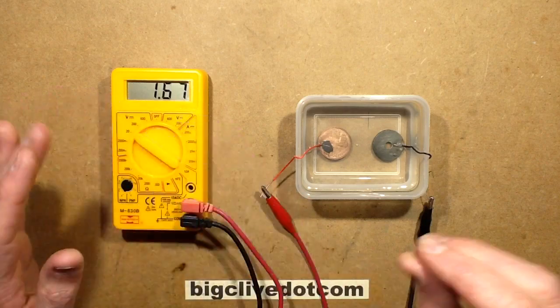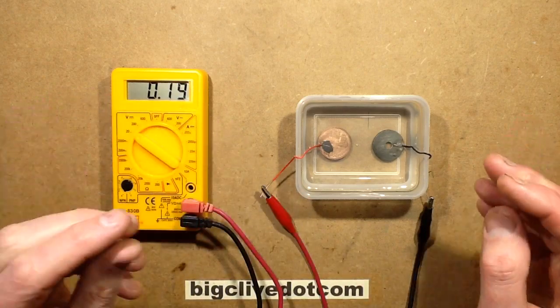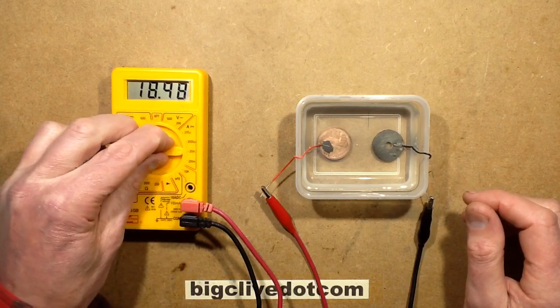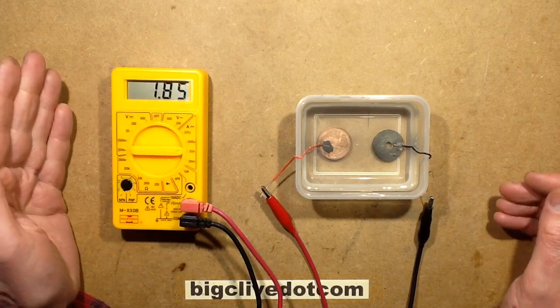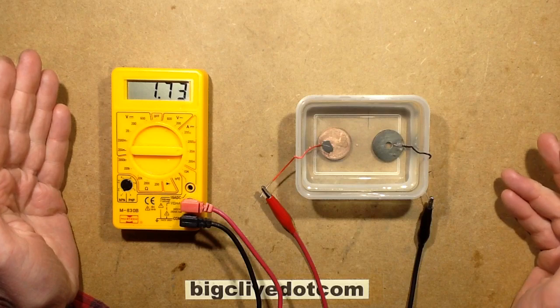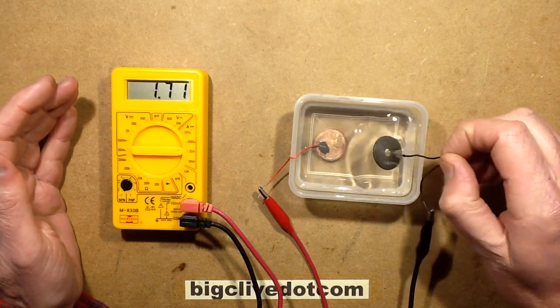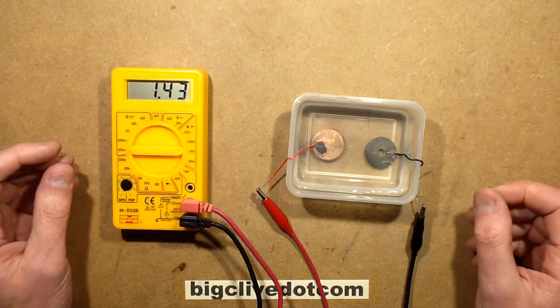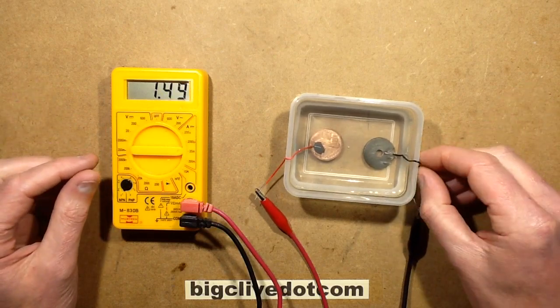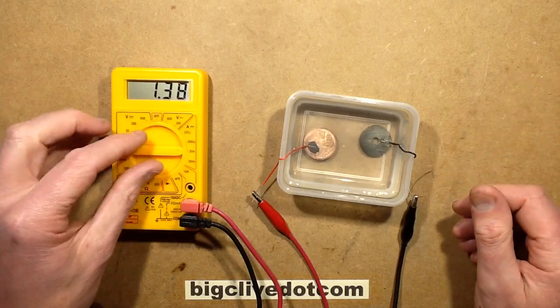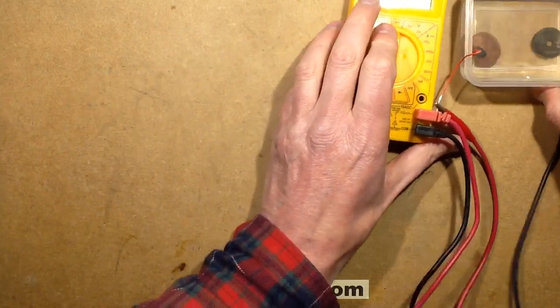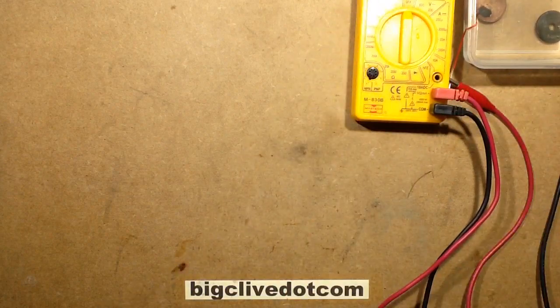But there still is a potential difference between the two metals. If I turn this around to the current setting, it's a milliamp or two. Keep in mind that these are very small bits, about 25 millimeters, sort of inch-ish in diameter. On larger bits of metal it would result in much higher current, but anyway, let's scale this up and show where the real problems occur.